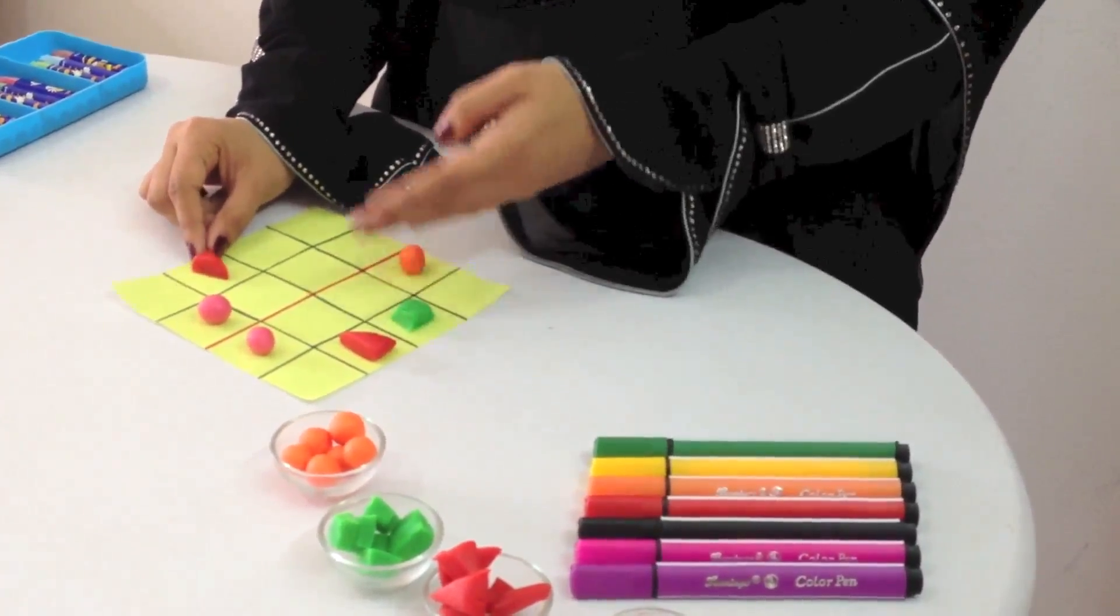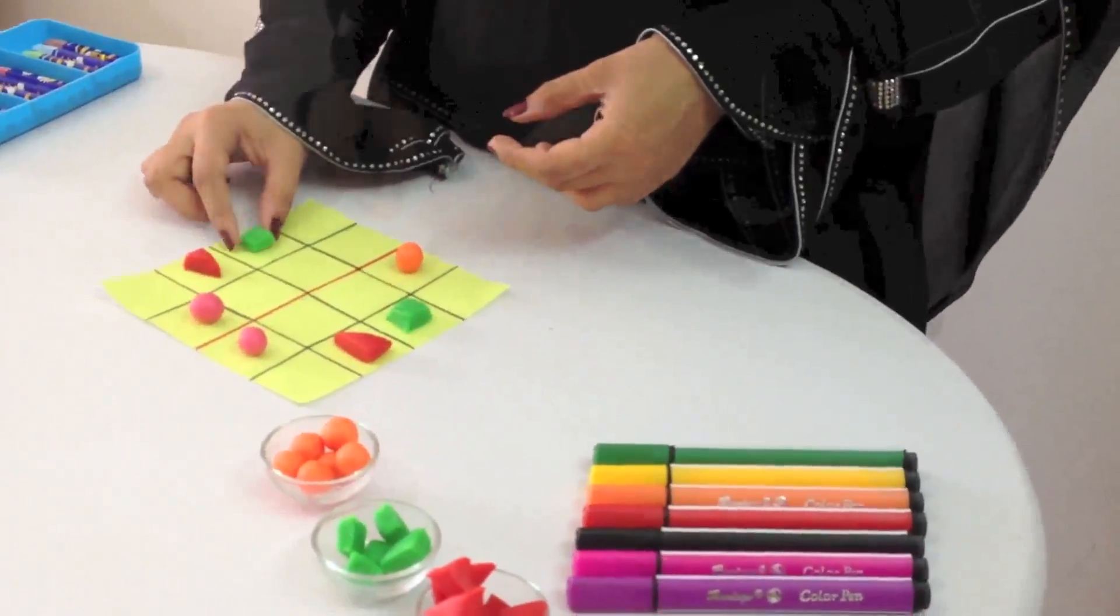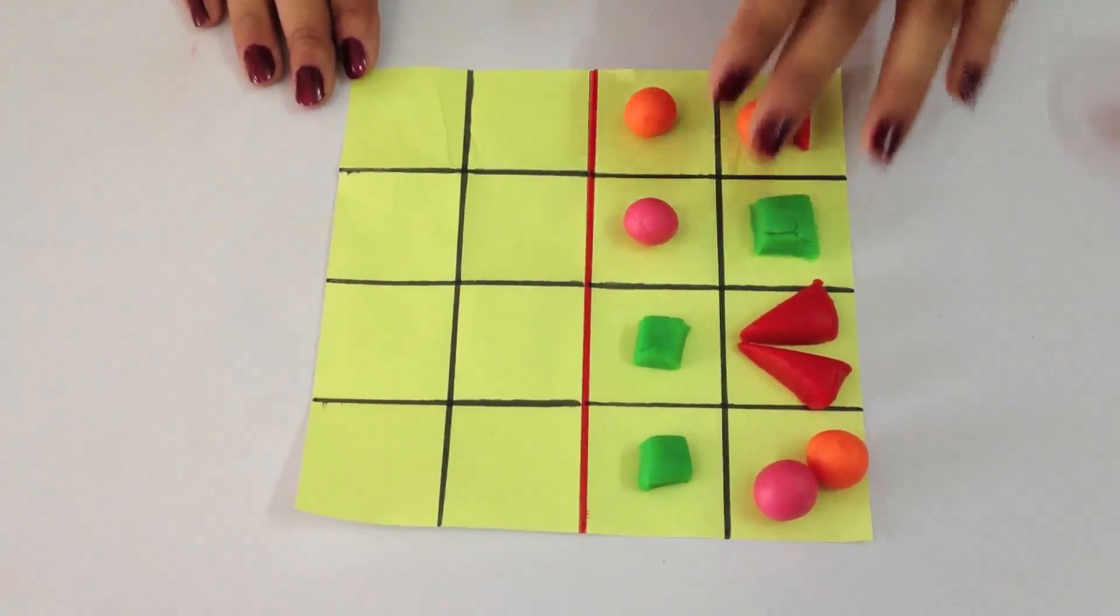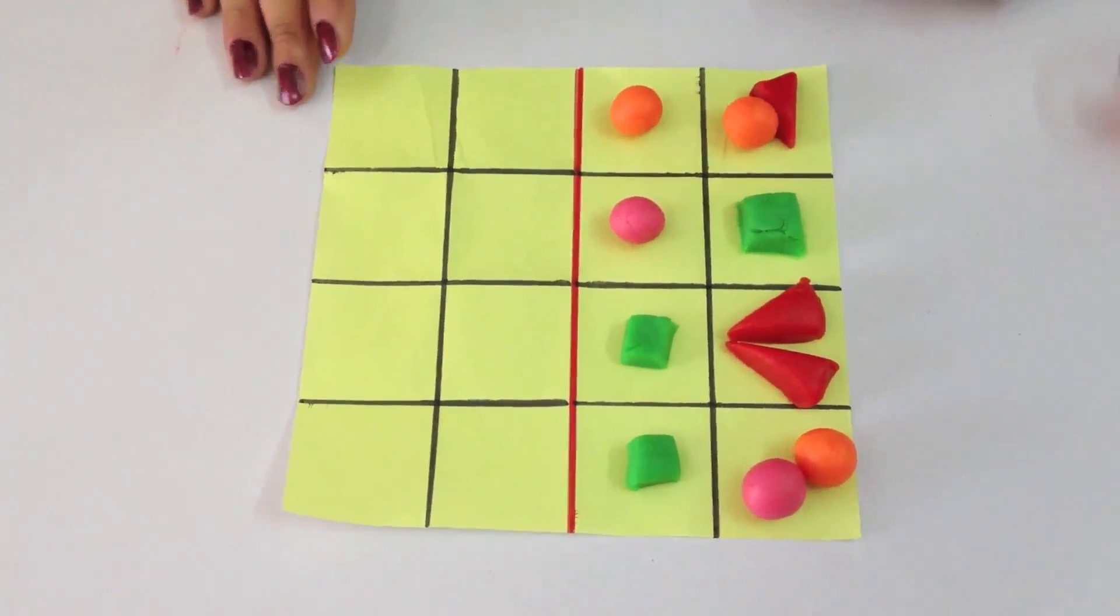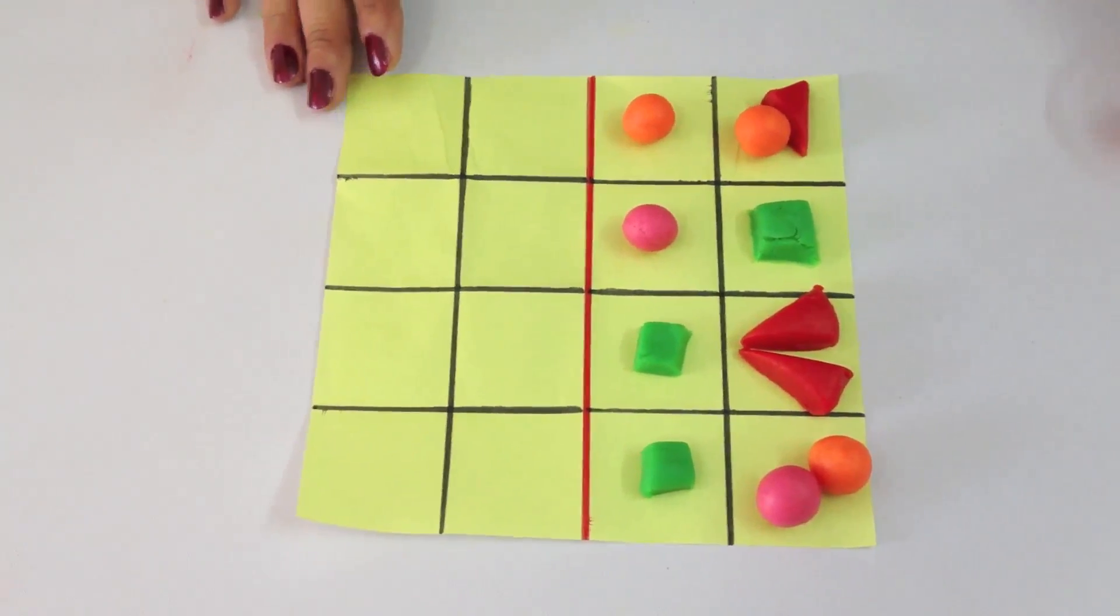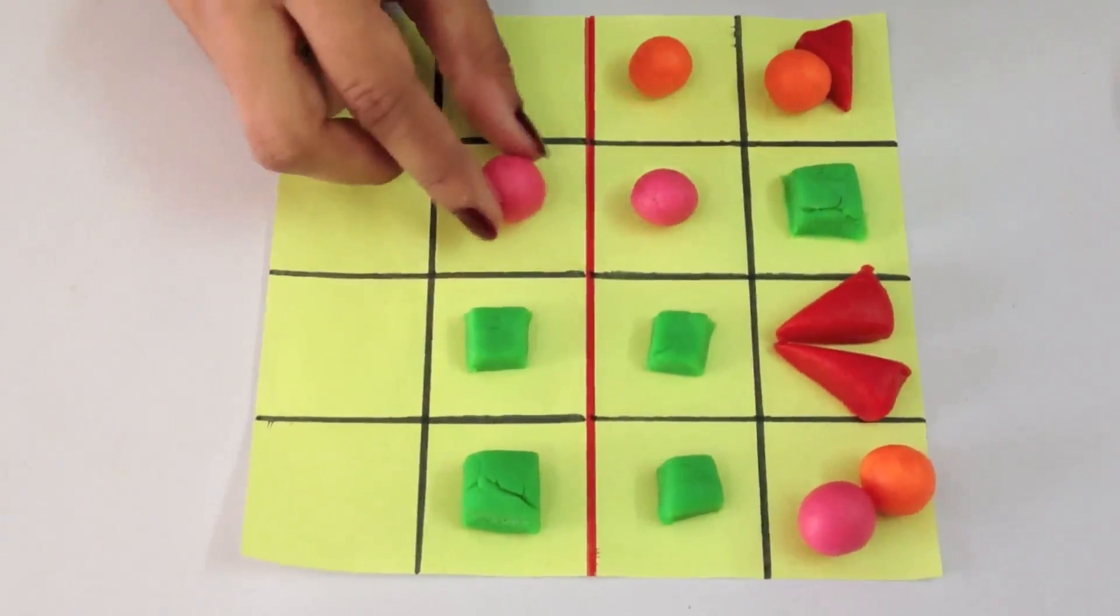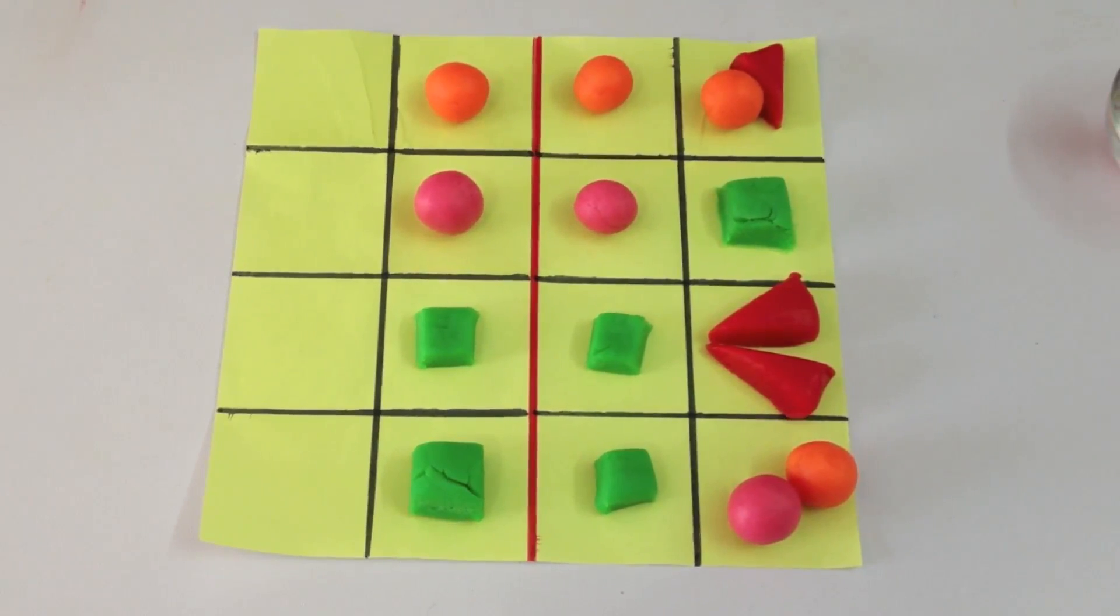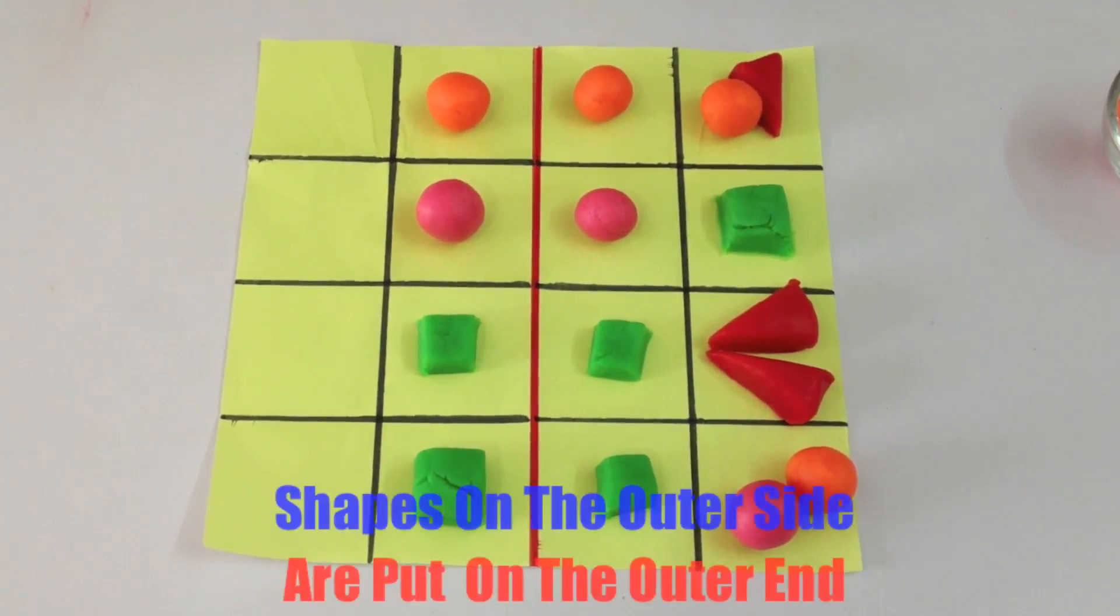This is another pattern on the grid, and we are going to make it symmetrically on the other side. Now this square has two shapes: the sphere and the triangle. We look at the shape which is placed on the outer edge of the square, which is a triangle, and we place it in the same way. Then we place the sphere in the inner edge.